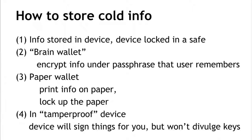With that in place, we can talk about different ways cold information can be stored. The first way is to store the information on some kind of device — a laptop, a mobile phone, a tablet, or a thumb drive — and put that device in a safe. We store the information on the device, turn the device off, and lock it up. Now if somebody wants to steal this, they have to get into our locked storage and physically take that device.